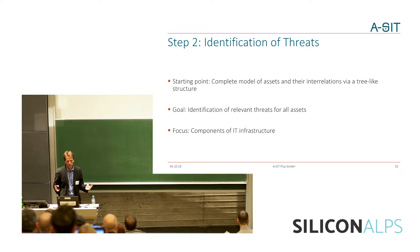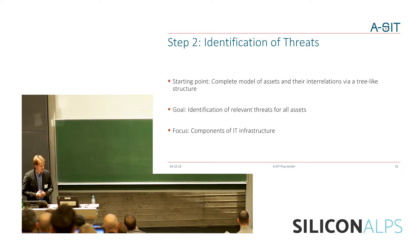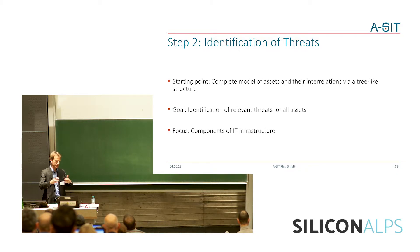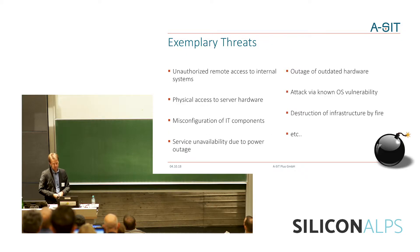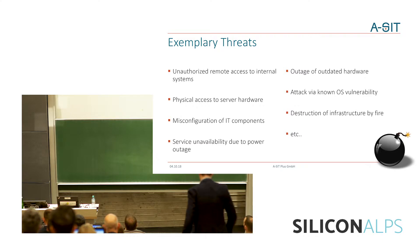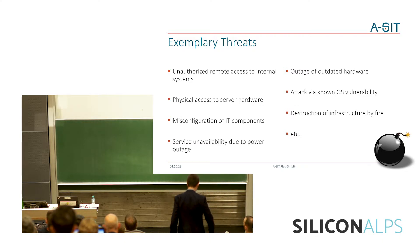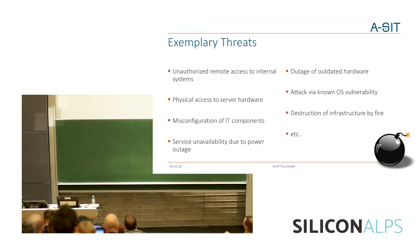If everything works out as expected, we end up with a hierarchical model that reflects our organization and contains all assets and their interdependencies. The next thing we do is find out what are the actual threats and risks for all these assets. The starting point is our model we have just created, and the goal now is to find out all the threats, with focus on components of the IT infrastructure. Just a few examples of what we mean with threats: unauthorized remote access to internal systems is the typical use case, but also misconfiguration of an IT component by your IT administrator, or the outage of outdated hardware.